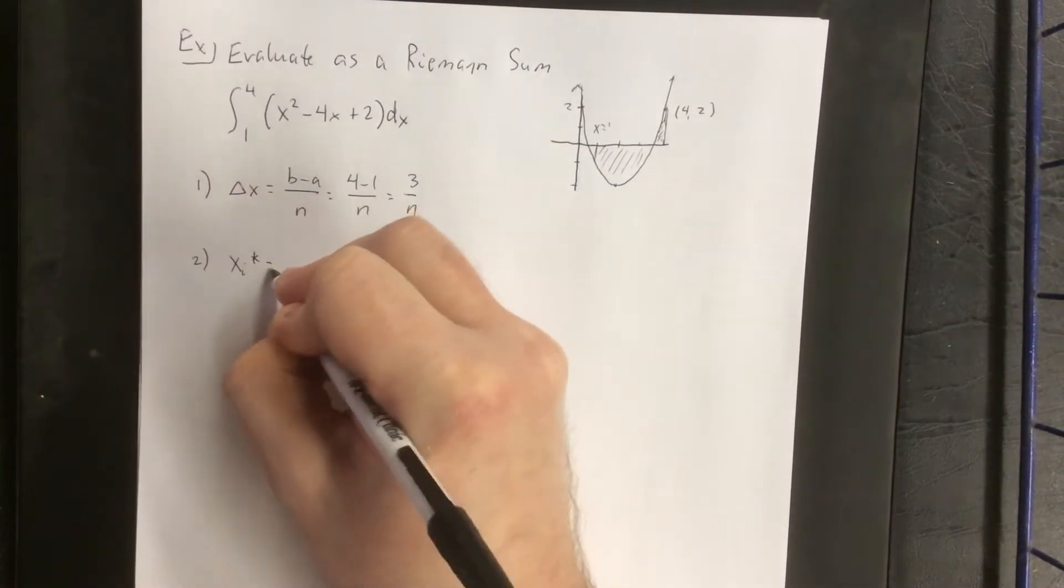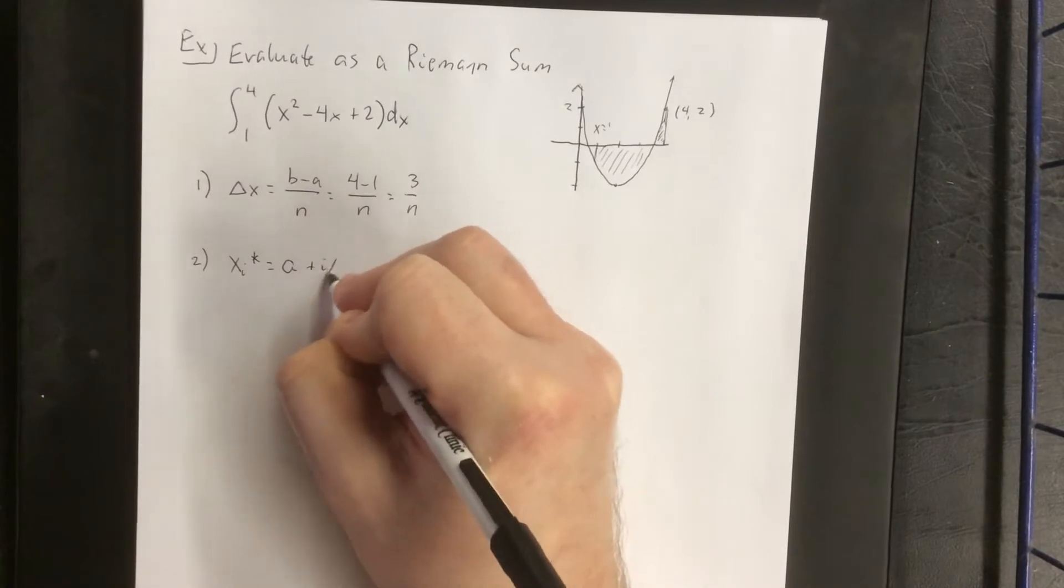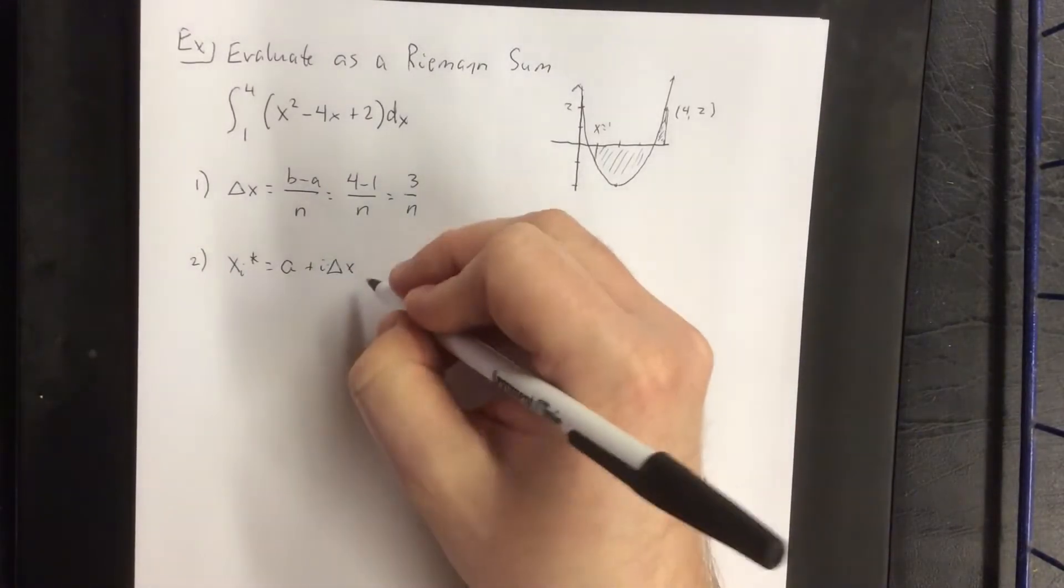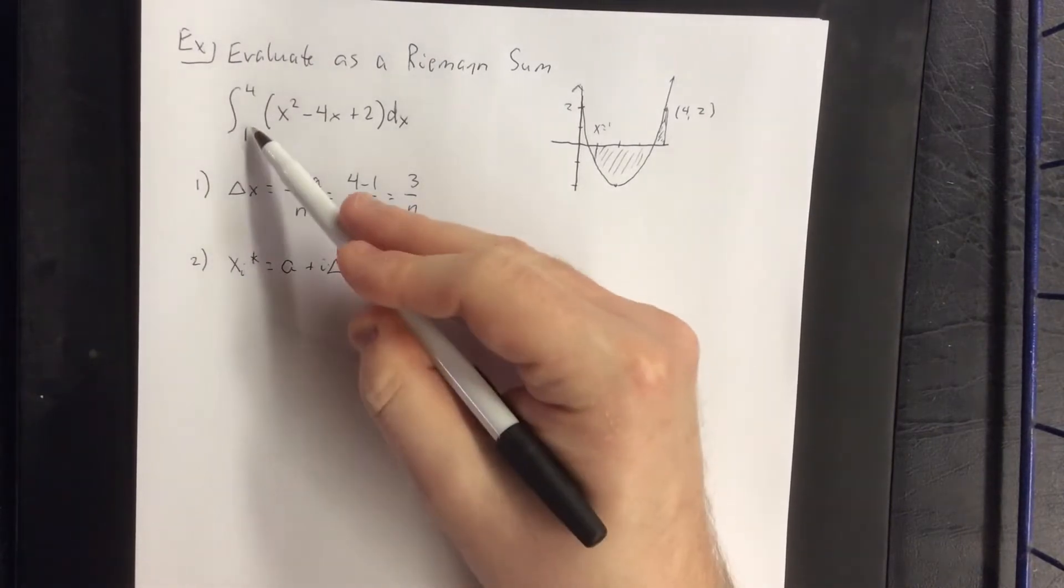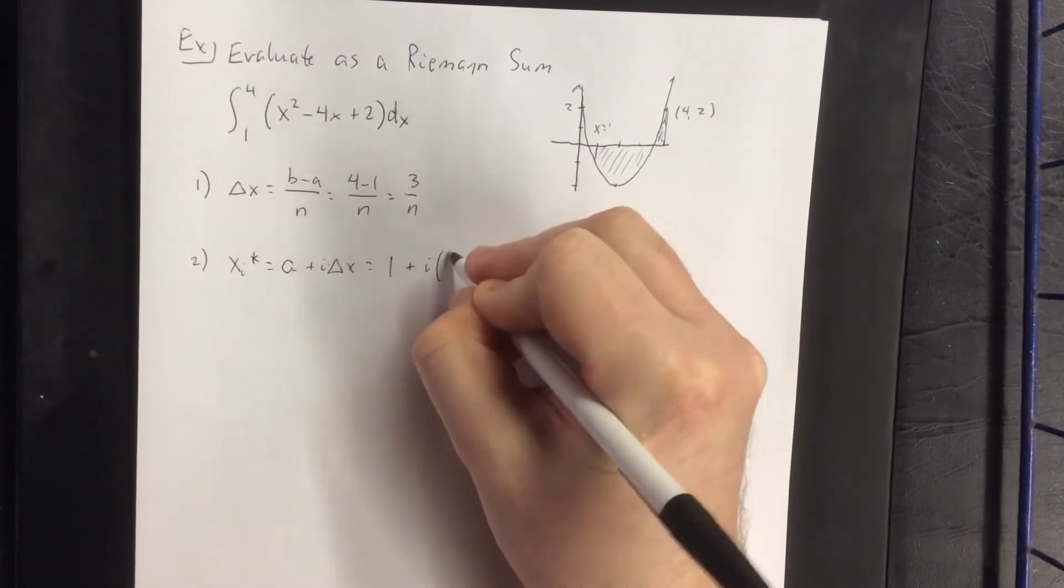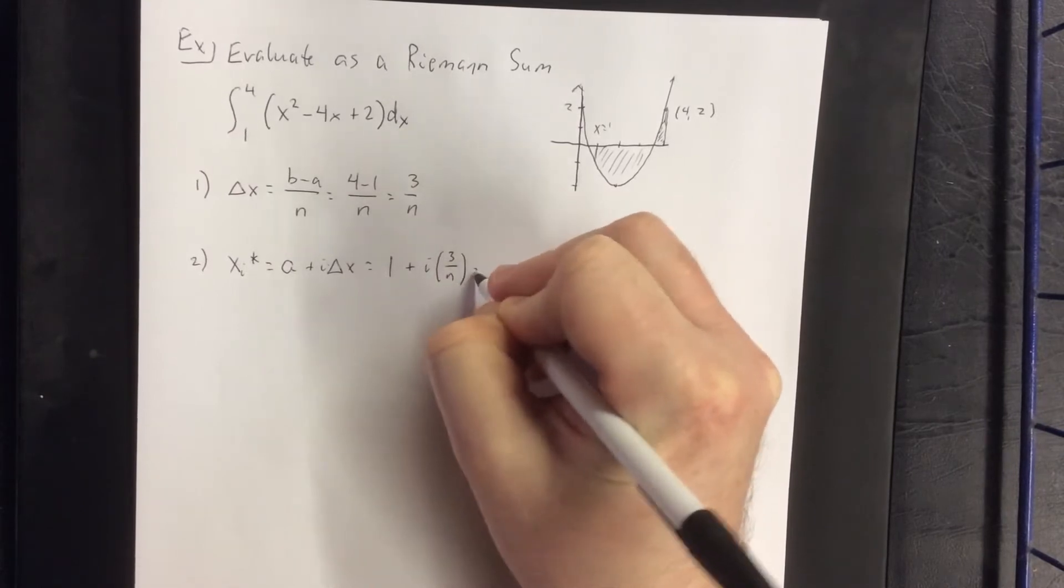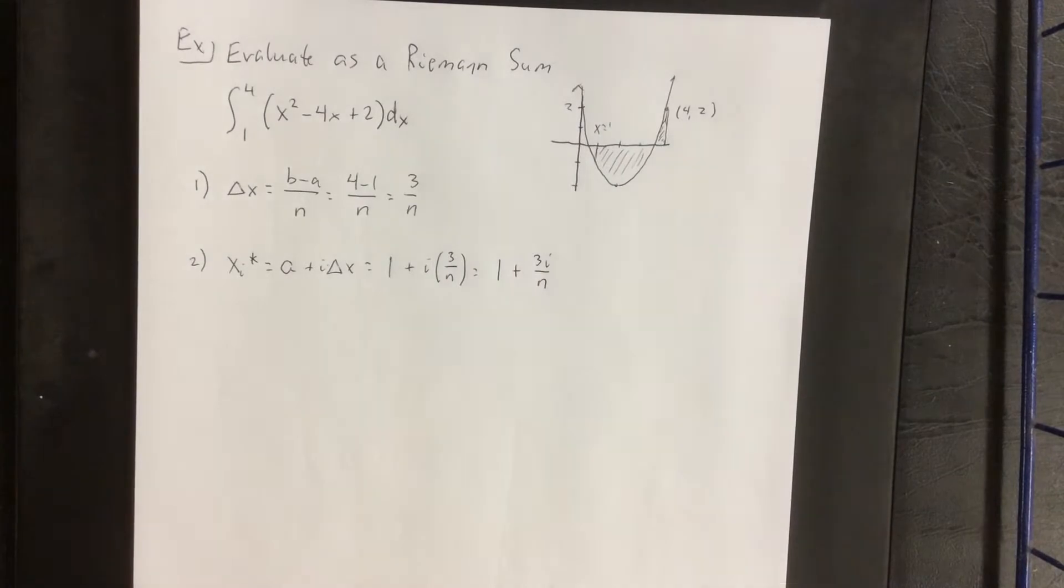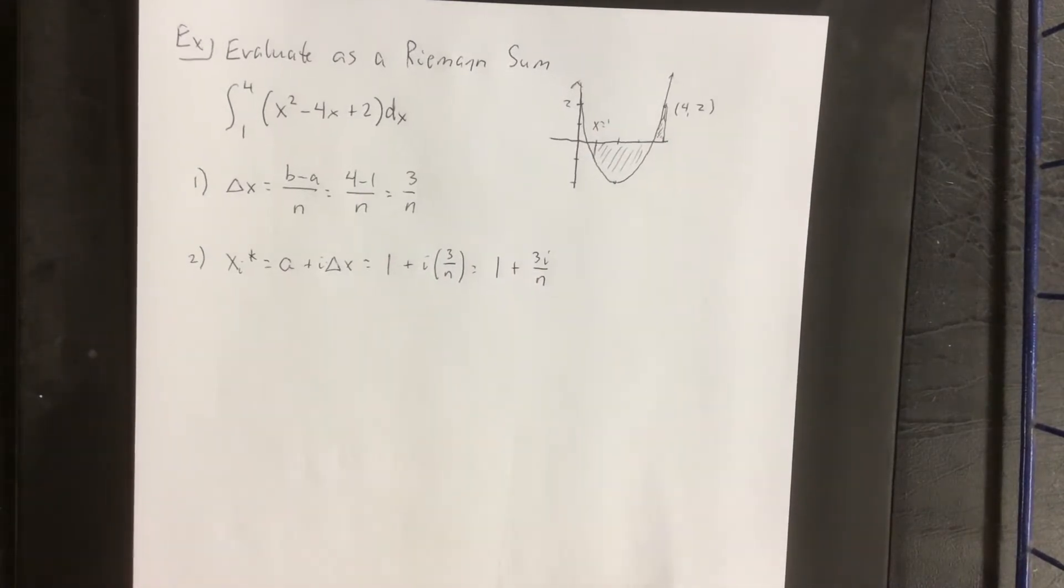For our sample point for each interval, the formula is a plus i times delta x. A is your starting point for the interval. That's 1 plus i times delta x. So that'll be 1 plus 3i over n.